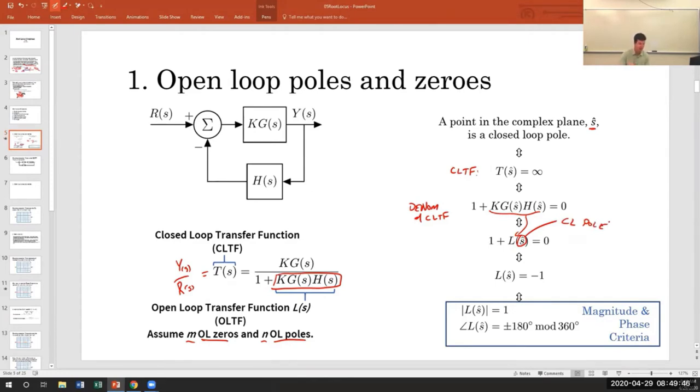A point in the plane is a closed loop pole if and only if it makes the closed loop transfer function infinite. And that only happens if the denominator of the closed loop transfer function equals zero when evaluated at that point. But we are calling this thing the open loop transfer function. So this is a way to talk about a closed loop pole. This is still a closed loop pole in terms of the open loop transfer function. I am evaluating the open loop transfer function at a closed loop pole location and I have to get negative one.